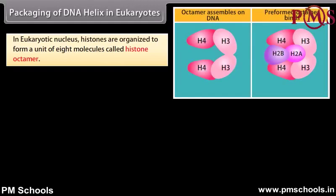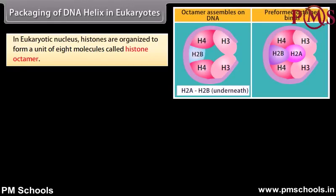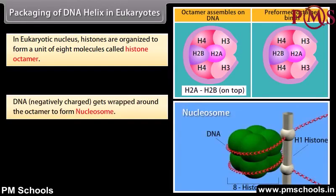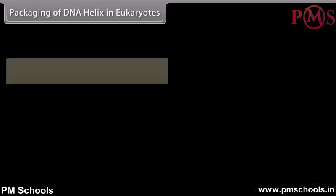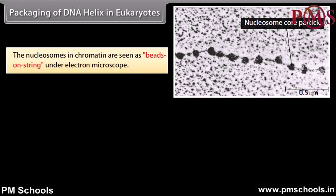Packaging of DNA helix in eukaryotes. In the eukaryotic nucleus, histones are organized to form a unit of 8 molecules called a histone octamer. DNA, which is negatively charged, gets wrapped around the octamer to form a nucleosome. Repeating units of nucleosomes form thread-like structures in the nucleus called chromatin. The nucleosomes in chromatin are seen as beads on a string under an electron microscope.